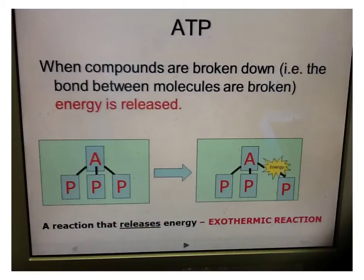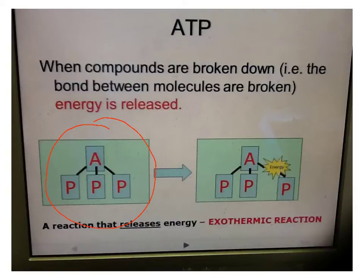We're going to look quickly at ATP and what happens with ATP during the first two seconds of exercise, and then we're going to move on and see how the ATP-PC energy system re-synthesizes ATP. What goes on in the first two seconds is that one of the phosphate bonds is broken off, and that's an exothermic reaction because we get the release of energy.